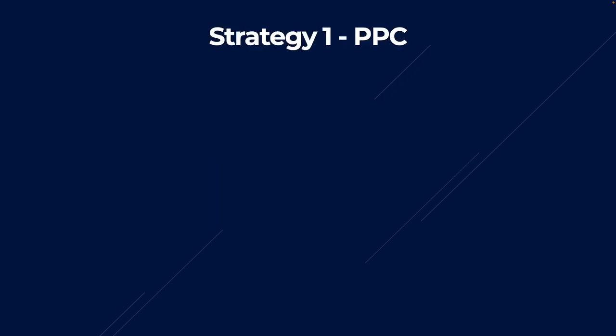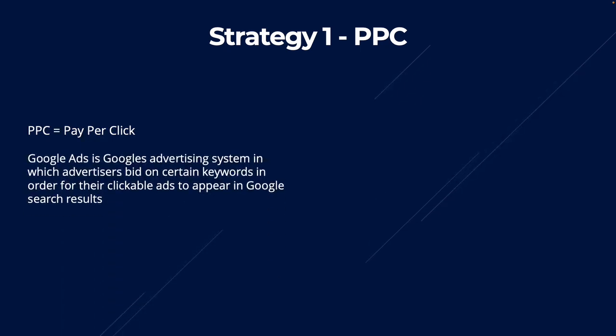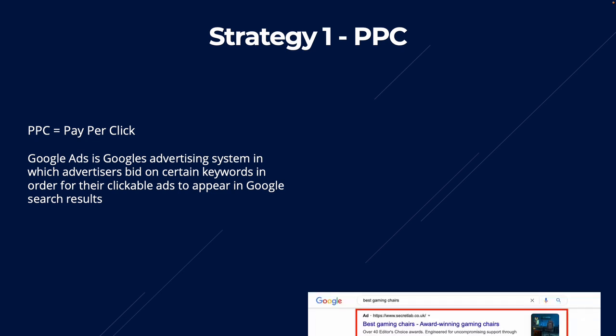The first strategy I want to run you through is called PPC. PPC stands for pay per click and, as it sounds, is a marketing strategy where you pay for every click you generate. The most typical way that affiliate marketers use PPC is by using Google's ad platform called Google Ads, which is Google's advertising system where advertisers bid on certain keywords in order for clickable ads to appear in the Google search results.